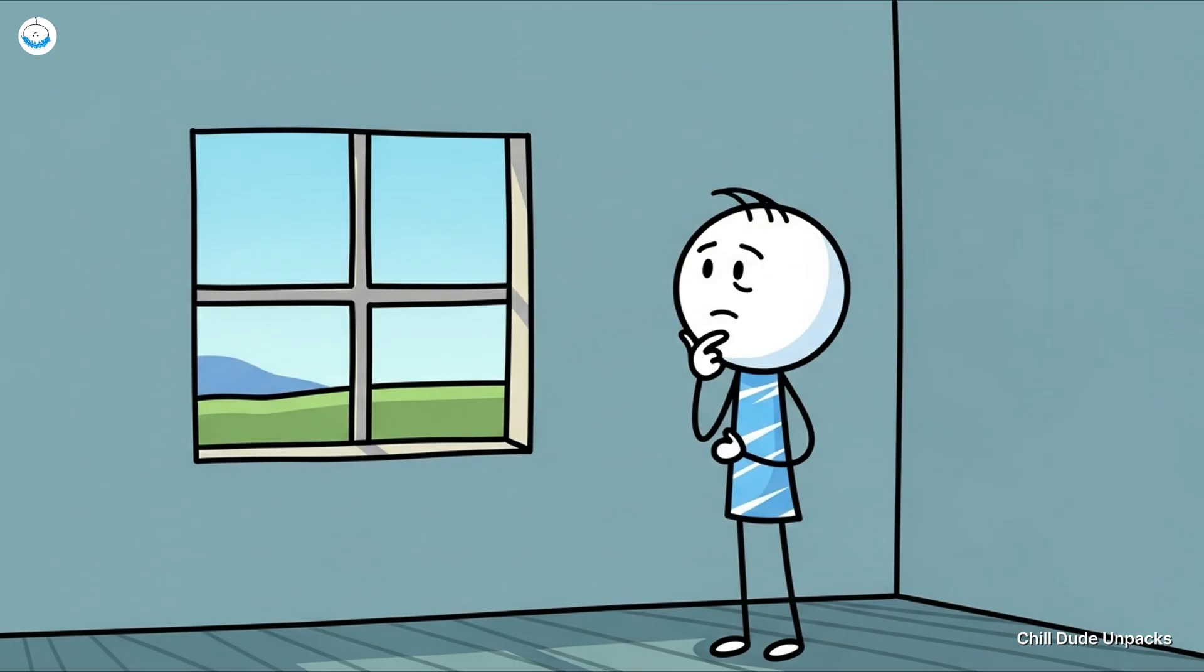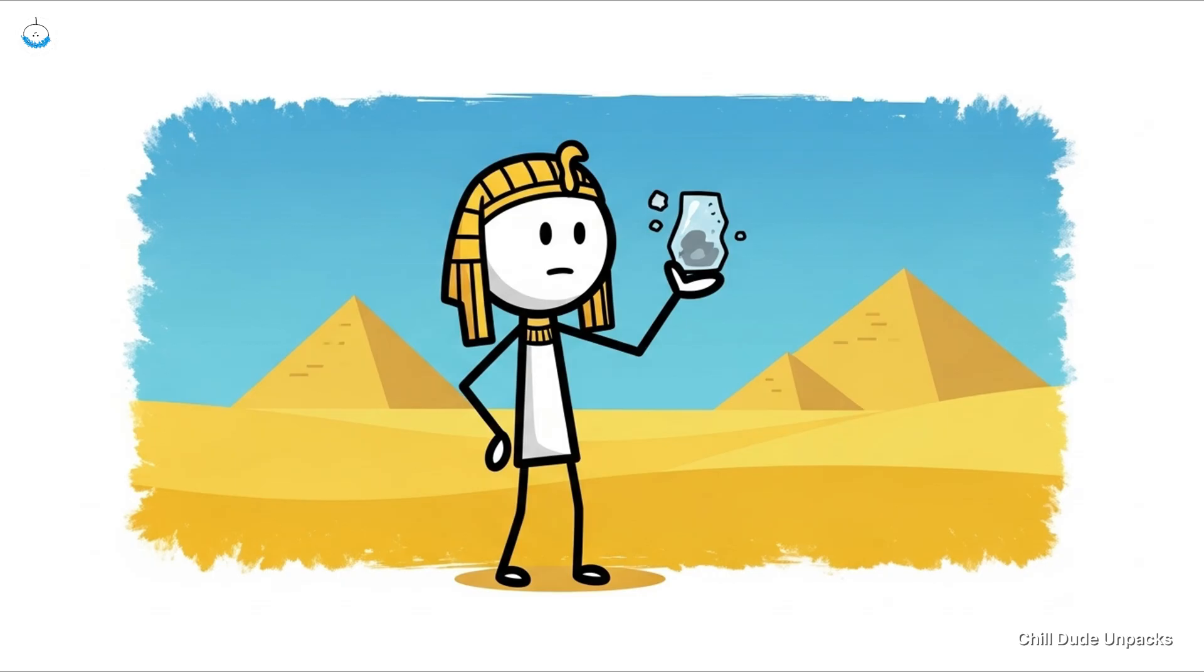Number five, glass—the ancient Instagram filter for life. You ever look out of a window and think, 'Wow, what a simple, obvious invention'? Yeah, ancient people thought the same thing, except, you know, they had to invent it first. Glass making goes back at least 3,500 years, with the ancient Egyptians and Mesopotamians cooking up the first wobbly, slightly cloudy glass pieces.